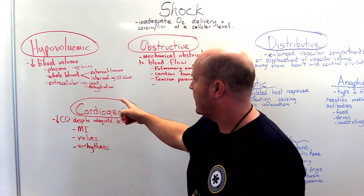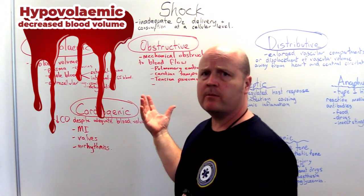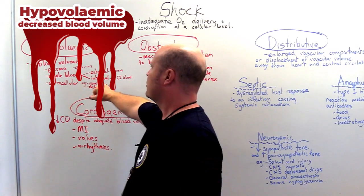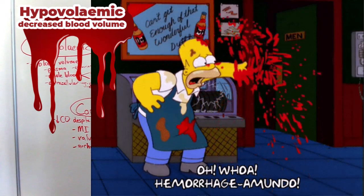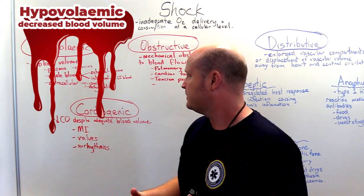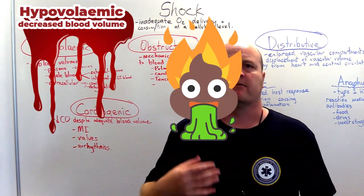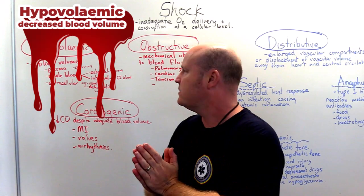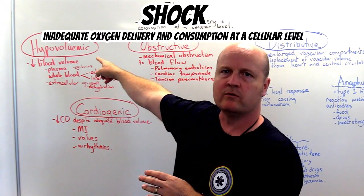We start on this side. We've got hypovolemic. So this is where we have decreased blood volume. This blood volume could be a decrease in plasma — like when we have a burn, we lose a lot of our plasma. Could be whole blood — we can cut someone and that blood is lost externally. Or we could have GI bleeding and have internal bleeding, as long as it's out of circulation. Then we have extracellular loss — vomiting, diarrhea, dehydration. Anything when our blood volume decreases can lead to inadequate oxygen delivery and consumption at a cellular level and hypovolemic shock.